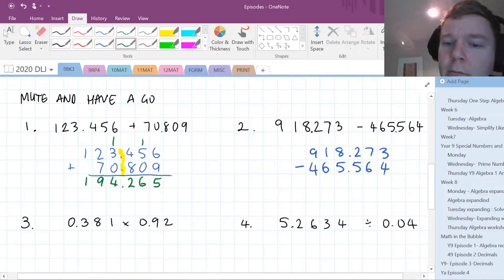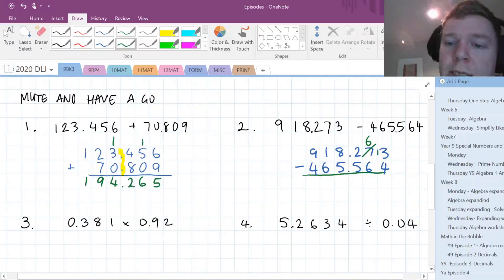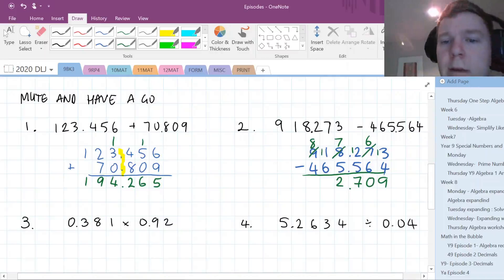3 minus 4, we can't do it. So we need to take 1 off the 7. If we're taking 1 from the next column over, we're bringing 10 units over. So this is now a 13. 13 minus 4 is 9. 6 minus 6 is nothing. 12 minus 5 is 7. 7 minus 5 is 2. 11 minus 6 is 5. 8 minus 4 is 4.